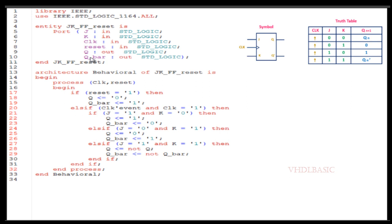This is the code generated by ChatGPT. If you see line numbers 9 and 10, Q and Q-bar are the output ports of this module. We are taking the value of Q and Q-bar and assigning them back to Q and Q-bar in lines 28 and 29. Some tools will give an error since we are assigning an output port back to the same output port.